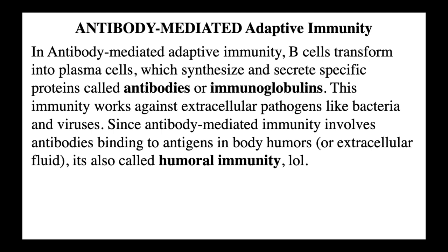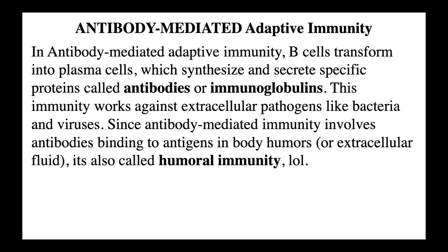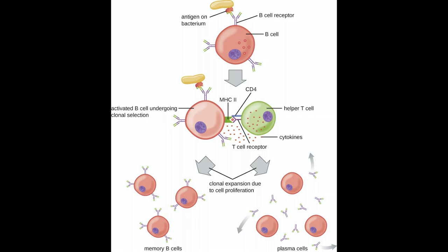In antibody-mediated adaptive immunity, B-cells become plasma cells, and plasma cells make antibodies. This immunity works against extracellular pathogens like bacteria and viruses. Since antibody-mediated immunity always involves antibodies binding to antigens in body humors, it's also called humoral immunity. The difference is that B-cells become plasma cells, and it's the antibodies that actually do the attacking.